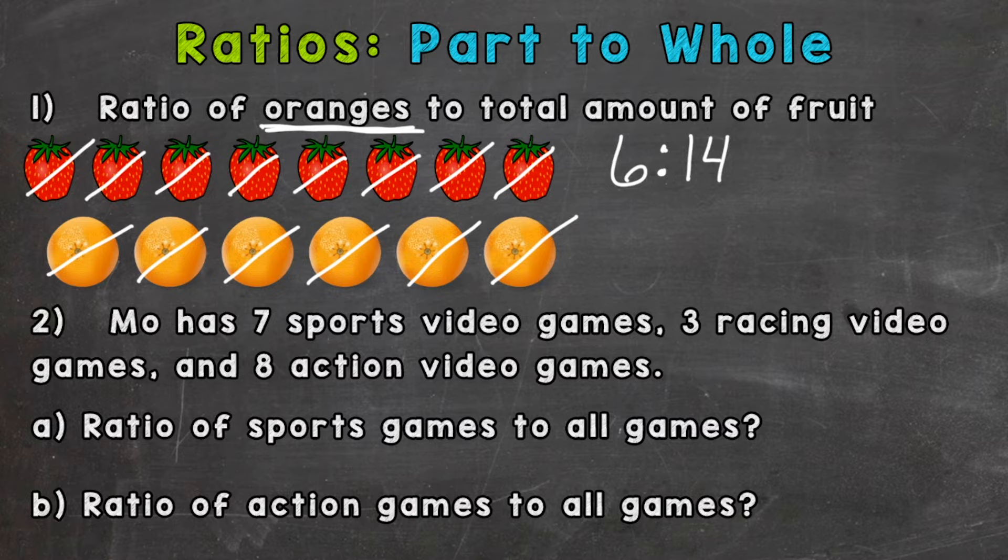Now this ratio can be simplified. 6 and 14 have a greatest common factor of 2, so let's divide them both by 2. You always want to simplify your ratios if you can. So 6 divided by 2 is 3 and 14 divided by 2 is 7, so our simplified ratio would be 3 to 7.